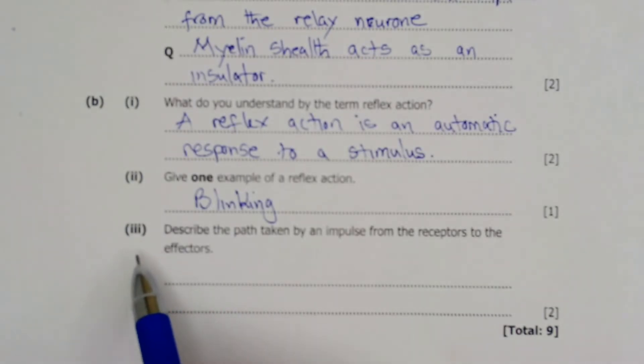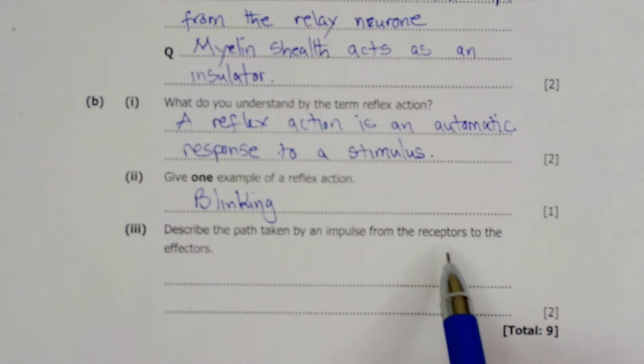Next part B3. Describe the path taken by an impulse from the receptors to the effectors. So here, when we talk about the movement of an electric impulse, it will start with a receptor, which can be a sense organ, for example the skin, the eye, the tongue.